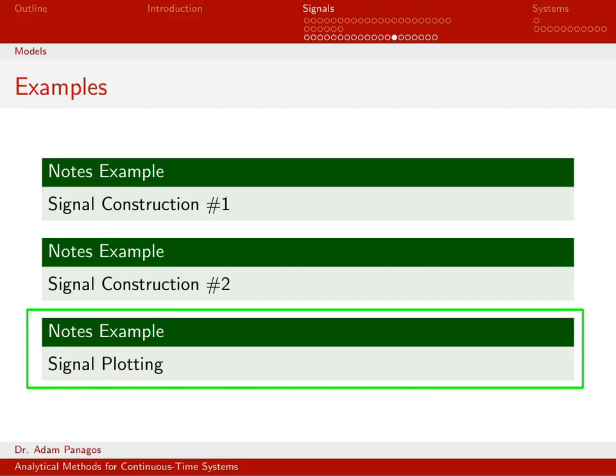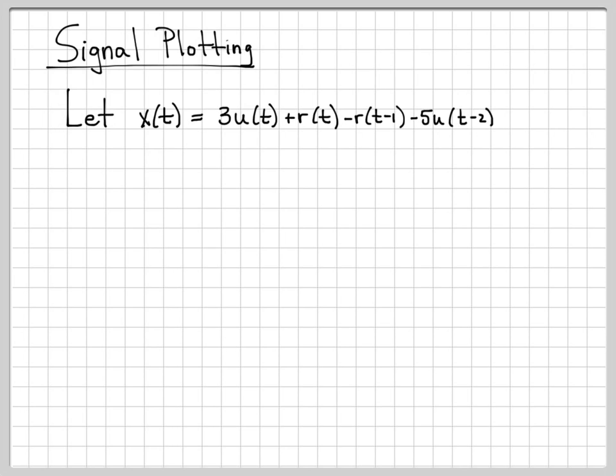So to wrap up this sequence of examples, we're going to do the opposite. In the last two examples, signal construction one and signal construction number two, we were given a figure and asked to come up with an equation. In signal plotting, we will be given an equation and we are going to plot the signal. So let's flip things around a little bit.